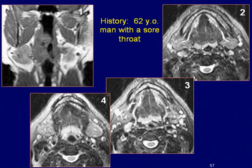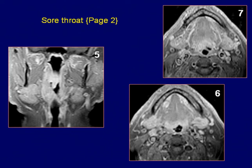The lesion appears as a hyperintense area on both sides of the tongue posteriorly. Multiple hyperintense nodules are seen on both sides of the neck, representing enlarged lymph nodes. Coronal post-gadolinium fat-saturated T1-weighted images demonstrate enhancement of the tongue lesion with extension.